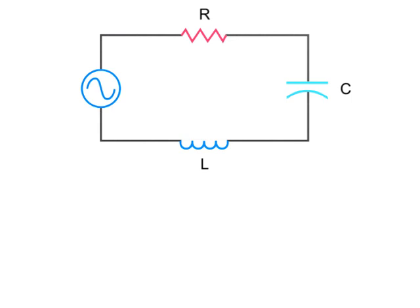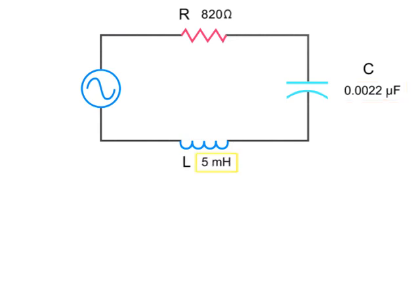In this circuit, there is an 820 ohm resistor, a capacitor of .0022 microfarads, and an inductor of 5 millihenries. The voltage source is 20 volts operating at a frequency of 40 kilohertz.